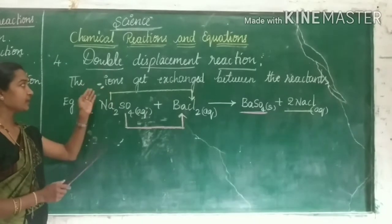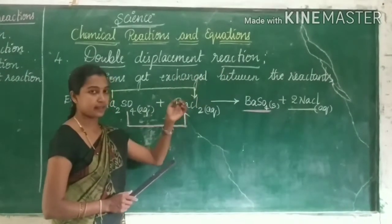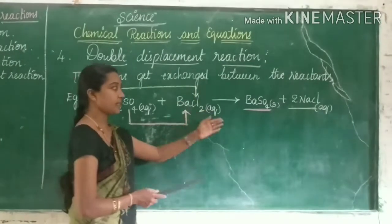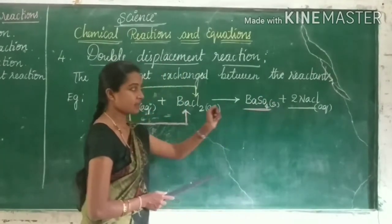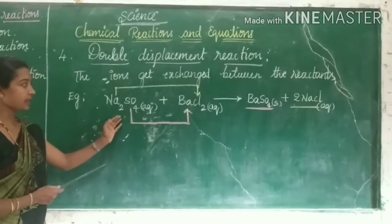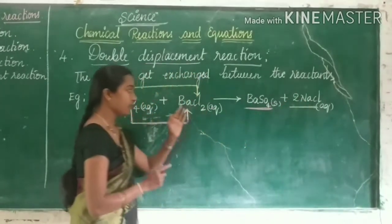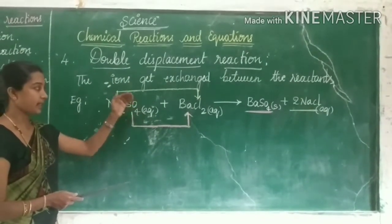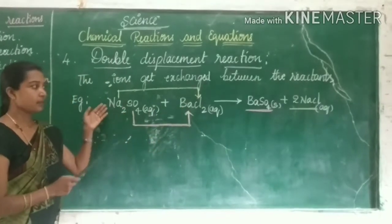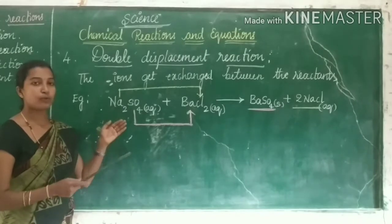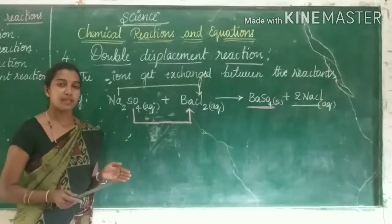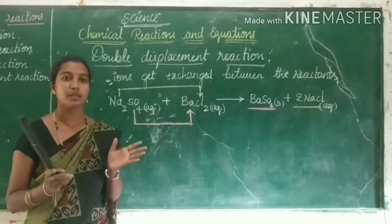Now come to double displacement reaction. This reaction takes place when the ions get exchanged between the reactants. For example, sodium sulfate solution reacts with barium chloride solution to produce barium sulfate and sodium chloride. In this reaction, ions get interchanged — sodium ions get attached to chlorine to form sodium chloride, and sulfate ions get attached to barium ions to form barium sulfate as a solid product. Such type of reaction is known as double displacement reaction, where ions get exchanged between reactants to produce new substances.